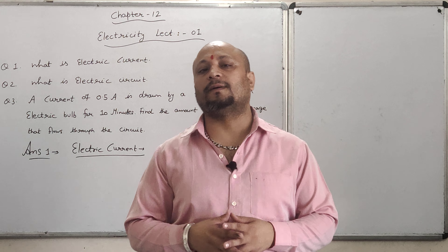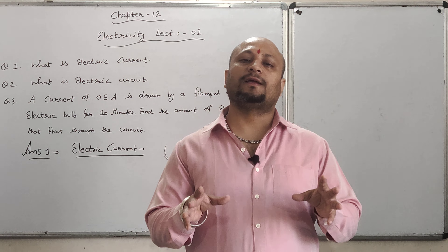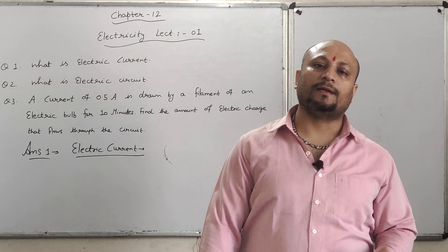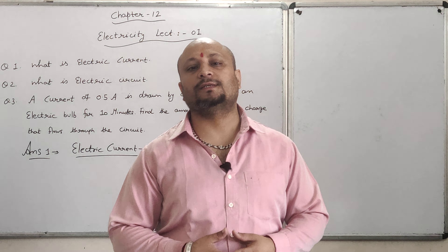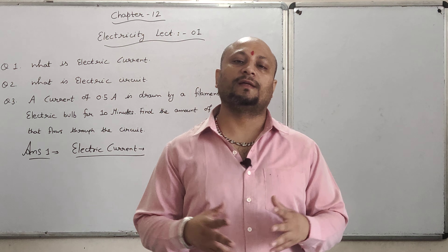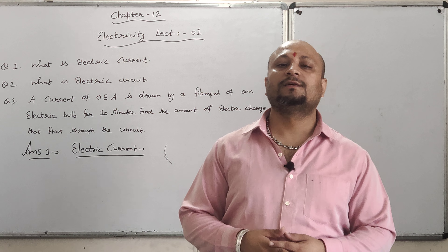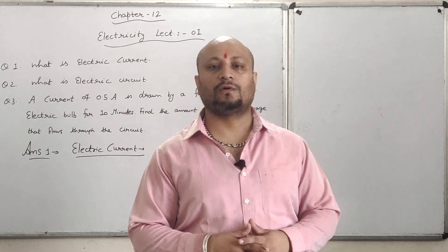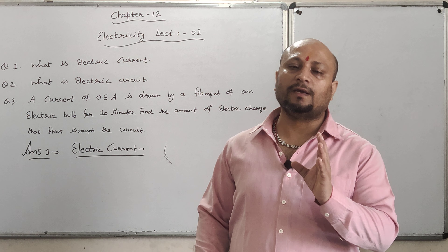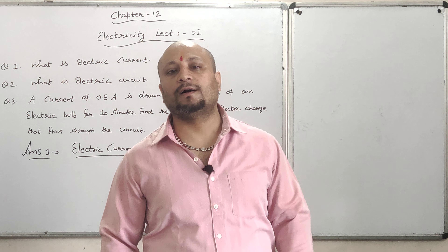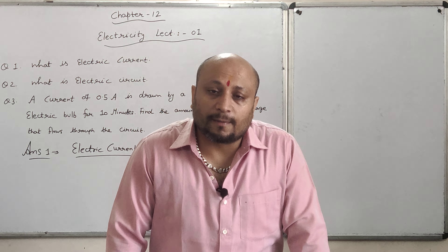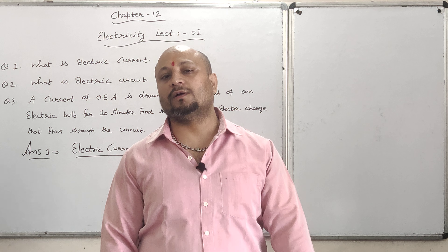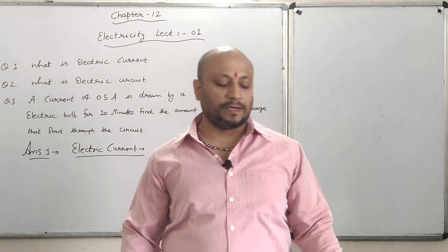If we talk about charge particles, the charge particles are automatically present inside the wire. But what happens is that they are moving randomly. If there is no particular direction of a charge carrier inside the wire, there is no current flowing across it. If current is to flow in any wire, then all the charge particles must flow in a particular direction.